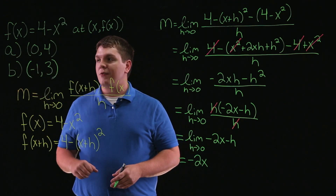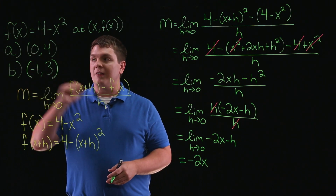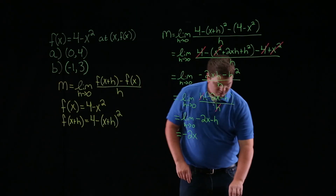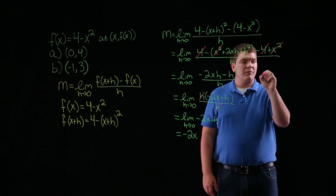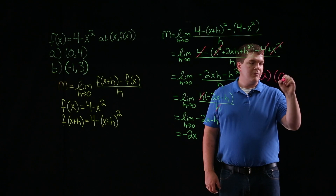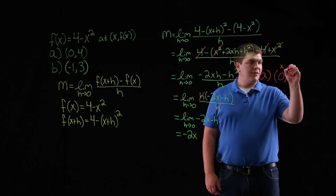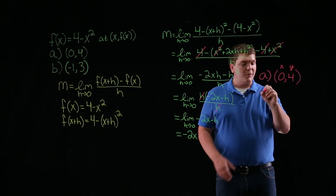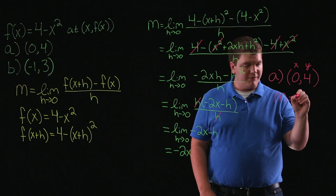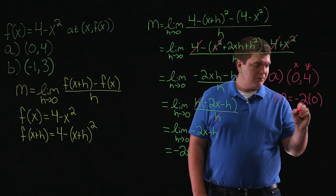Now to find the slope at the point 0, 4 and the point negative 1, 3, let's plug in these x values into our slope formula. For part a, we're looking at the point 0, 4. Remember, this is our x value and this is our y value. So looking for the slope at this point, m is equal to negative 2 times 0, which is equal to 0.